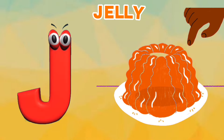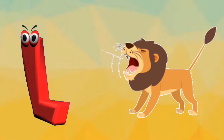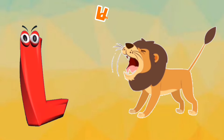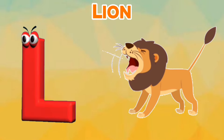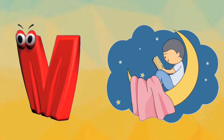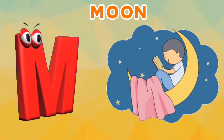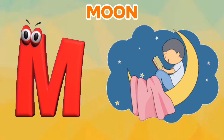K is for King. K, K. King. L is for Lion. L, L. Lion. M is for Moon. M, M. Moon.